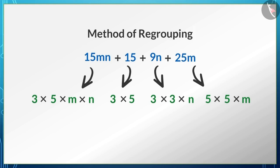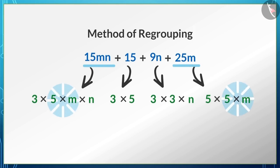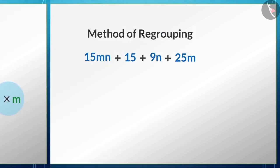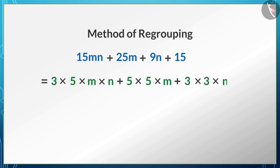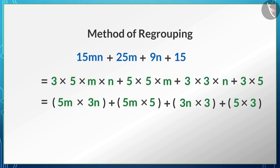We did not find any common factor in all four terms, but we can see that 5m is common in the first term 15mn and the fourth term 25m, and 3 is common in the third term 9n and the second term 15. So we rearrange these terms and write them as factors.